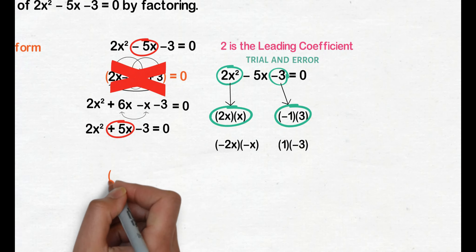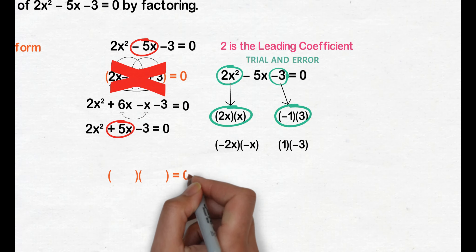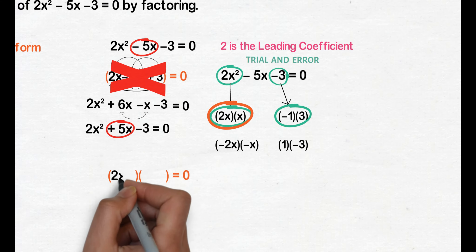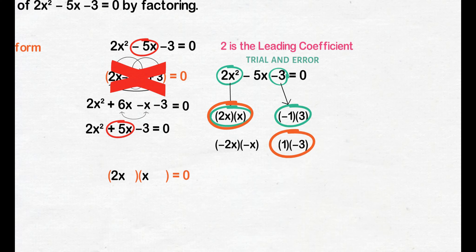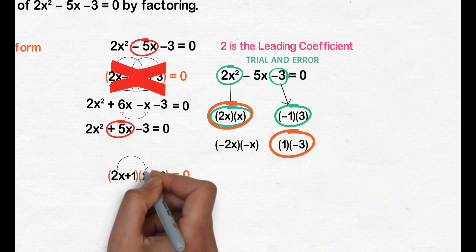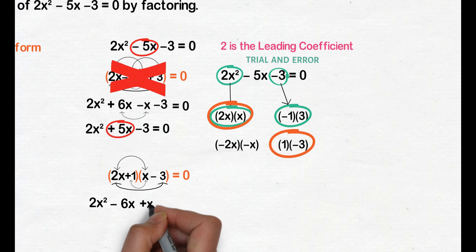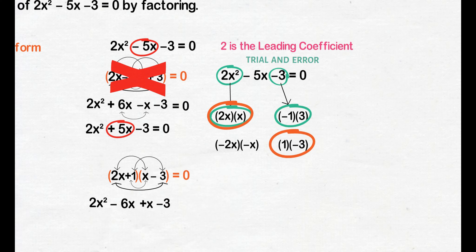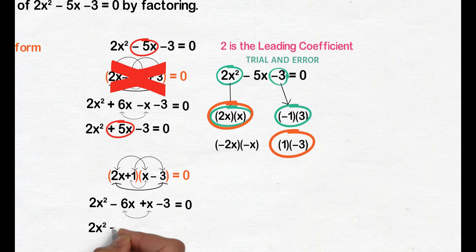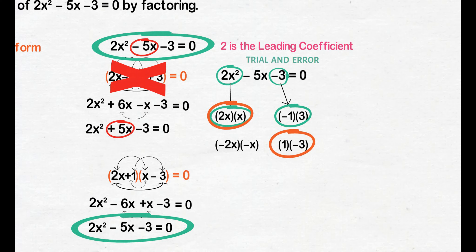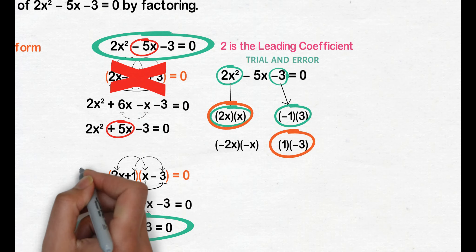So, magtatry ulit tayo ng bagong kombinasyon. Try naman natin ang kombinasyon ng mga factors na 2x at x and 1 at negative 3. Perform FOIL method: 2x times x is 2x squared, 2x times negative 3 is negative 6x, 1 times x is x, 1 times negative 3 is negative 3 equals 0. Combine similar terms negative 6x and x — we have negative 5x. Ang nakuha nating equation ay katulad ng original equation. Then, ang mga factors na 2x plus 1 at x minus 3 ang magiging binomial factors natin.